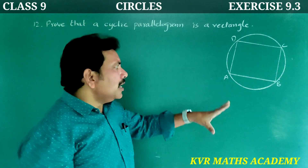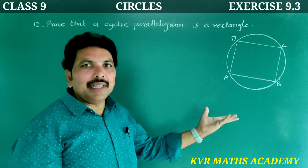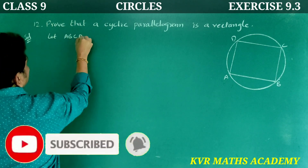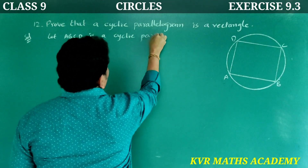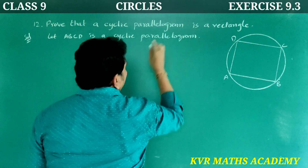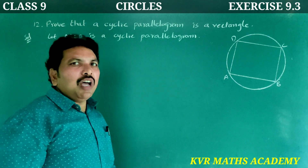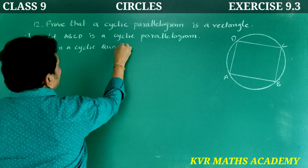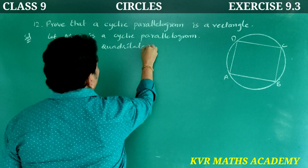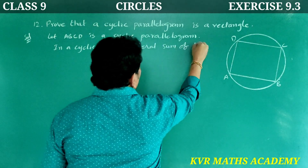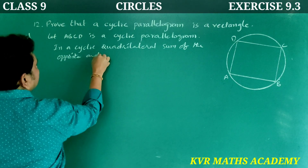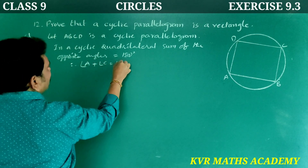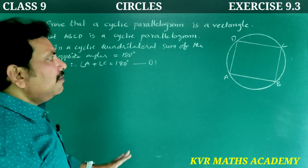So here we prove one angle is 90 degrees. Solution: Let ABCD be a cyclic parallelogram. In a cyclic quadrilateral, the sum of the opposite angles is equal to 180 degrees. Therefore, angle A plus angle C is equal to 180 degrees — equation number one.